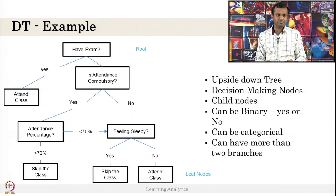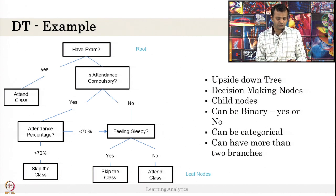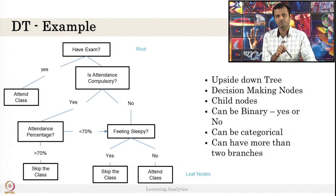This is a sample Decision Tree to see whether a student decides to attend a class or wants to skip the class. Let us see the two decisions - skipping the class or attending the class. If you have an exam in that particular class today, you will attend the class, high probability.